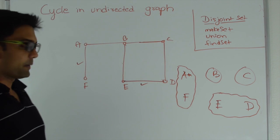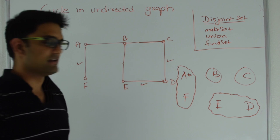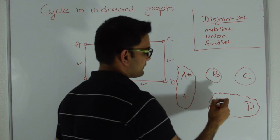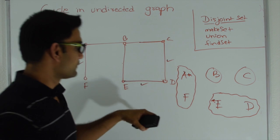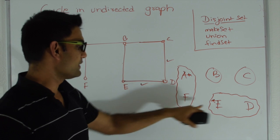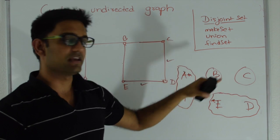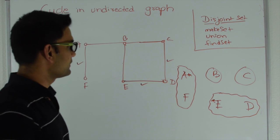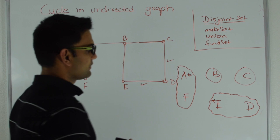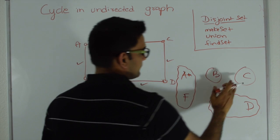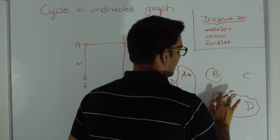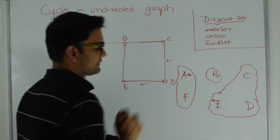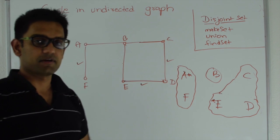Let's pick another edge — say C-D. We do a find set on D. Let's say this set is represented by E, so find set on D returns E, and find set on C returns C. Again these sets are different, so adding this edge is not going to create a cycle. So let's union them — something like this — and again E represents this entire set.